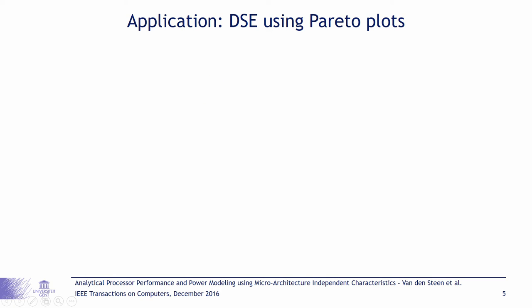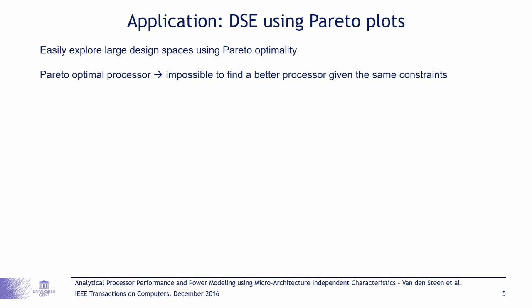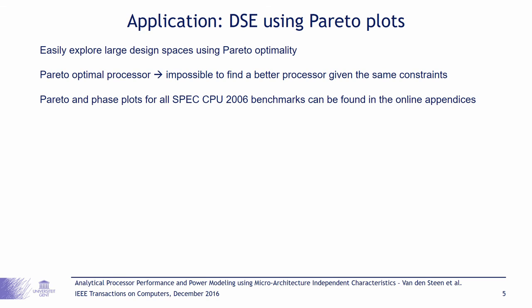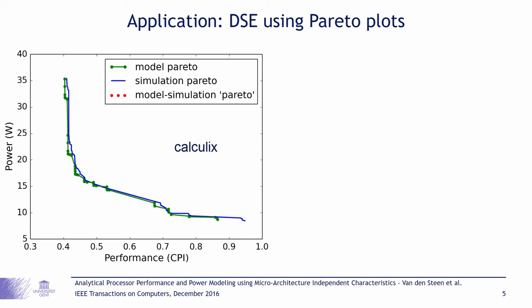Now let's get to the fun part: the results and a short demo. One of the exciting applications of our model is the ease by which one can search a design space for Pareto optimal processor architectures, which are designs for which it's impossible to find a better configuration given the same constraints. I'll show Pareto plots for two benchmarks, Calcolix and Gromax. The Pareto plot you see now is for the Calcolix benchmark and our model clearly predicts the performance and power for this benchmark very well over the complete design space.